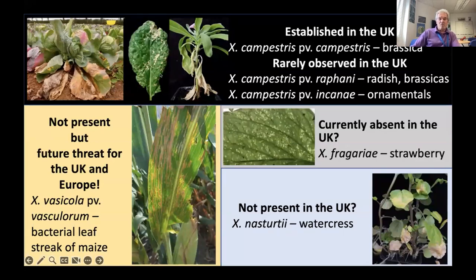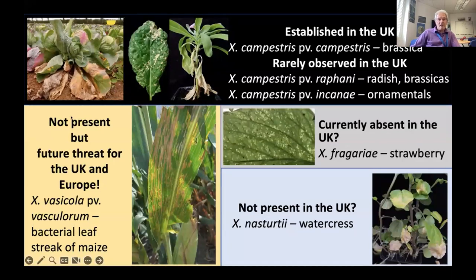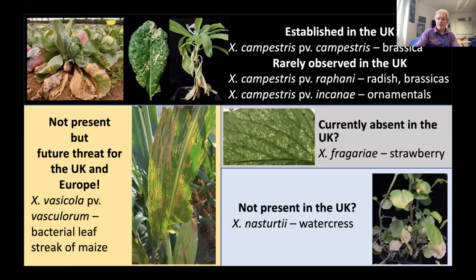What about the UK? We have Xanthomonas campestris as a problem here. We also have Xanthomonas campestris pathovar raphani on radish and brassicas, and carni on ornamentals such as wallflower. But we also have massive threats which are not yet present in the UK and Europe, and Fera is looking at these and doing pest-risk analysis on them. The major one is Xanthomonas vasicola pathovar vasculorum, which is bacterial leaf streak of maize — currently absent in the UK.